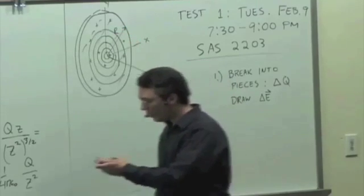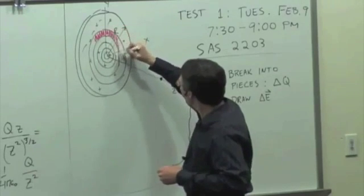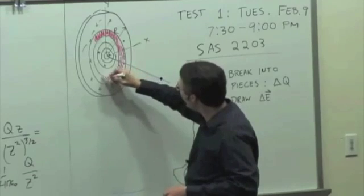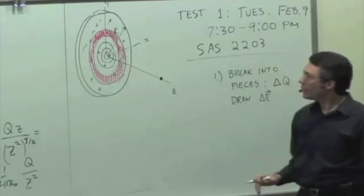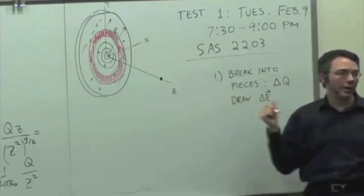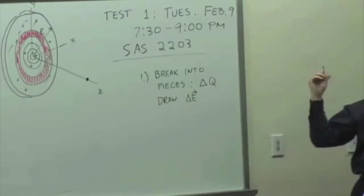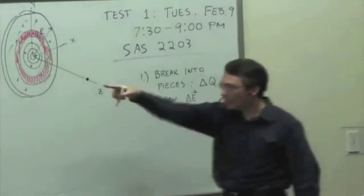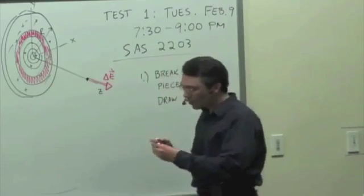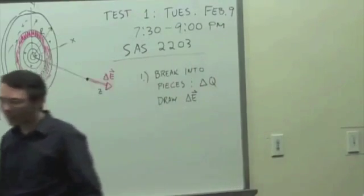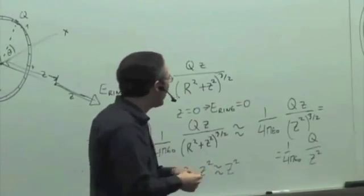We could say this disk is nothing more than a series of concentric rings. If we look at one single thin ring out of this disk — a thin ring that's positively charged — the electric field due to that ring is pointing in what direction at that location? In the positive z direction, same as it was in the previous case. So that's our delta E.